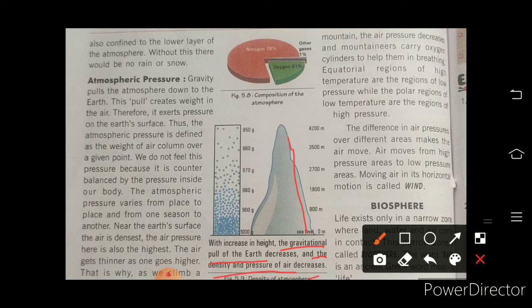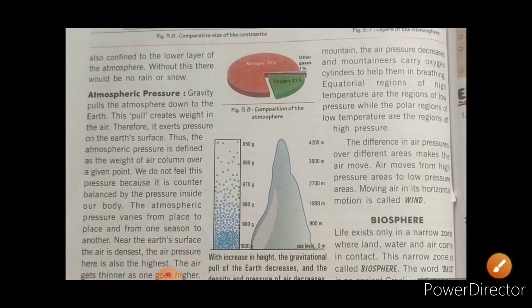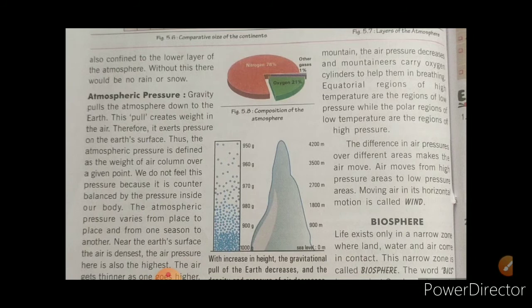For example, mountaineers — those who climb mountains — carry oxygen cylinders with them to breathe at high altitudes. Equatorial regions of high temperature are the reason for low pressure, while polar regions of low temperature are the reason for high pressure. The difference in air pressure over different areas makes the air move — air moves from high pressure areas to low pressure areas.